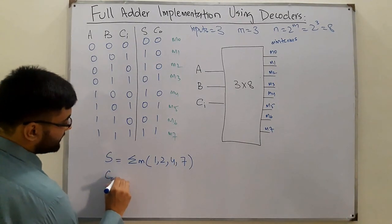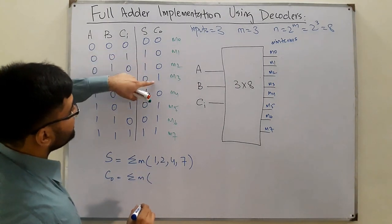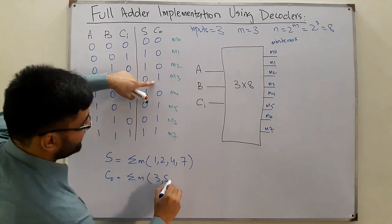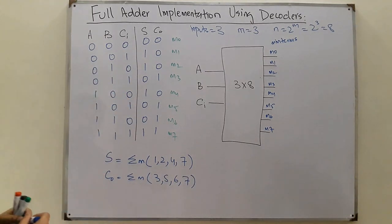And then for the carry output, you have the summation of minterms, that is m3, m5, m6, and m7—5, 6, and 7.